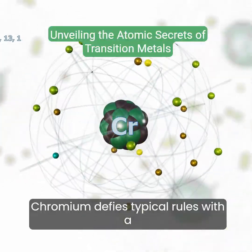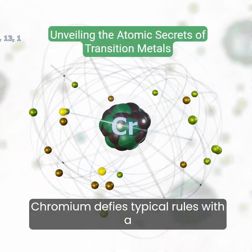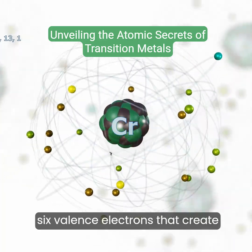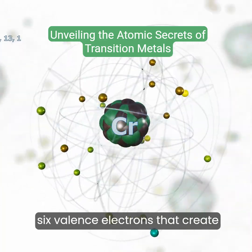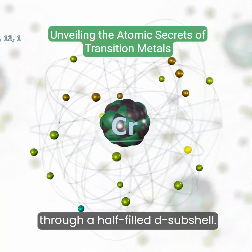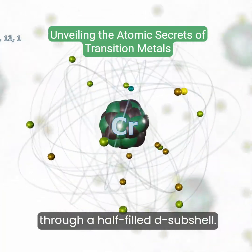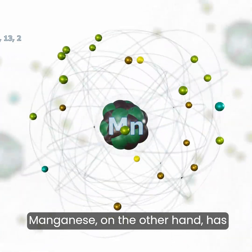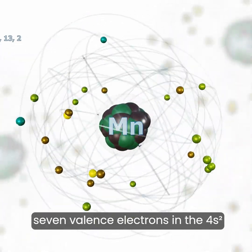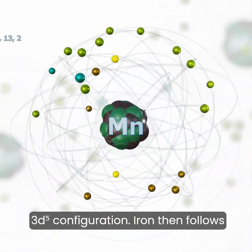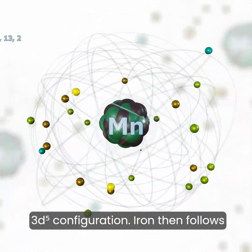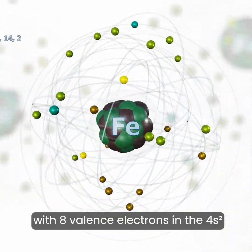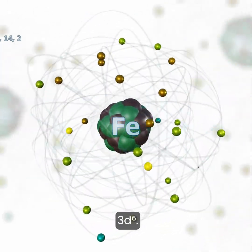Chromium defies typical rules with a configuration of 3d⁵4s¹, providing six valence electrons that create enhanced stability through a half-filled d-subshell. Manganese has seven valence electrons in the 4s²3d⁵ configuration, and iron follows with eight valence electrons in the 4s²3d⁶ configuration.